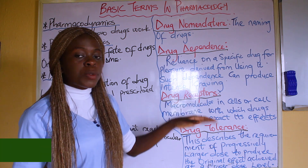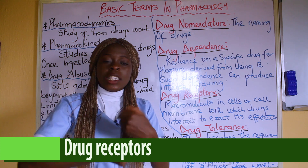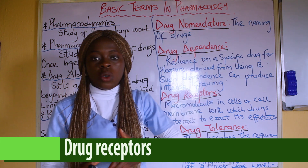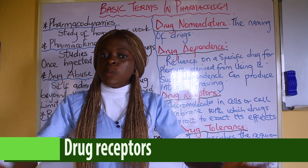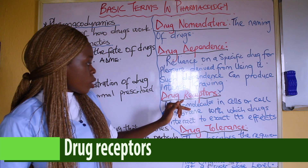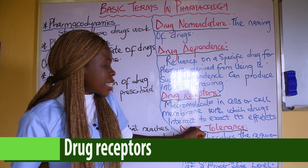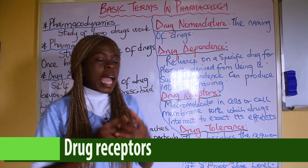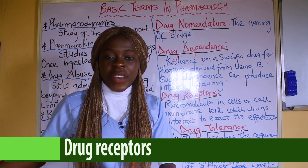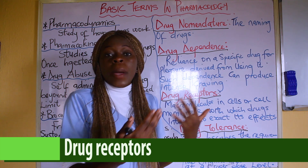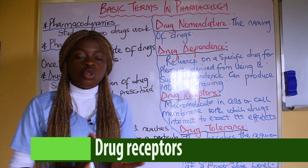The next term is drug receptors. When you take drugs into the body, the drug has receptors it must act on in order to carry out its function — it is the receptors that receive the drugs. Drug receptors are macromolecules in cells or cell membranes with which drugs interact to exert their effects. If there are no drug receptors or cell membranes for the drugs to interact with, they will not be able to carry out their effects. That is what drug receptors are.